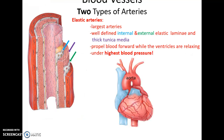There are two main types of arteries. Elastic arteries are the largest; they have well-defined internal and external elastic laminae and a very thick tunica media. They help propel blood forward when the ventricles relax — they get stretched from high blood pressure, and when the ventricles relax and blood pressure goes down, they return to their shape, pushing the blood onward.